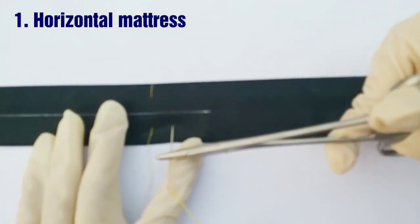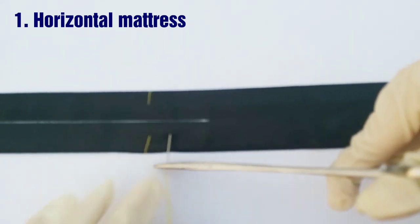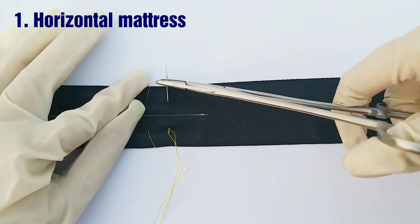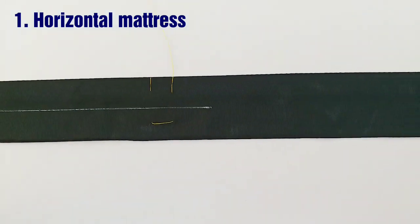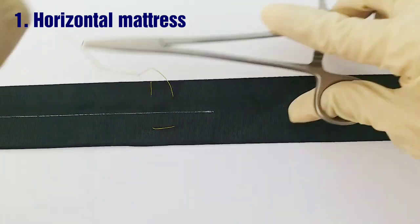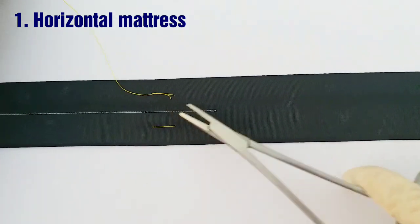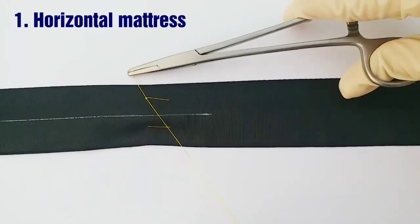Then reverse your needle and make an exit parallel to the first one. This way it forms a U-shape. Then you have to secure it by a surgeon's knot, which is two plus one, and then follow with two additional throws.